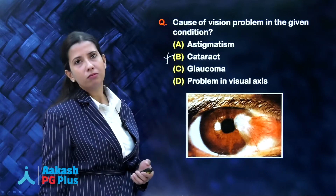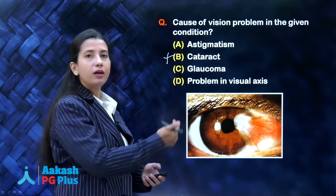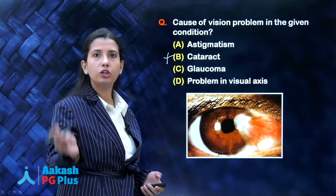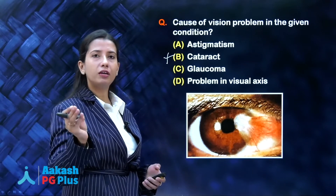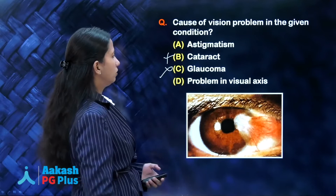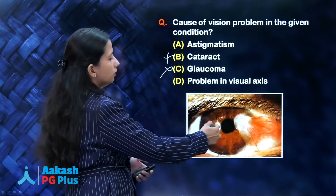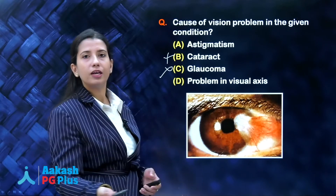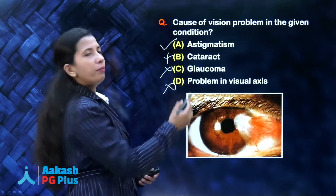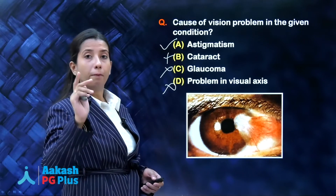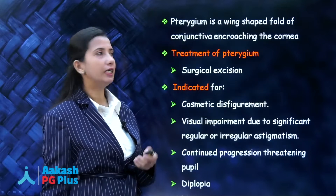Do you see glaucoma? We can't say just by looking at the clinical picture — we need to see the optic disc, intraocular pressure, and visual fields. So that is out. Problem in visual axis? No, the visual axis is clear with nothing in front of the pupil, so that is also out. You can eliminate all other options by exclusion. Since we are discussing pterygium, let us discuss it in detail.